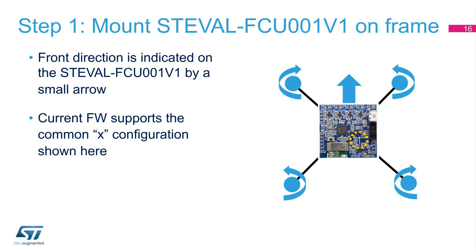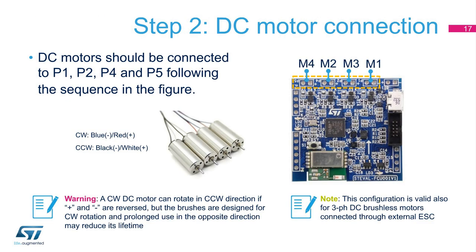Please note that to use a plus configuration, some modifications to the firmware are needed. To respect the directions and motor placement indicated on previous pages, DC motors should be connected to P1, P2, P4, and P5, following the sequence motor 1, motor 3, motor 2, and motor 4. Warning: a clockwise DC motor can rotate in a counter-clockwise direction if plus and minus are reversed, but the brushes are designed for clockwise rotation and prolonged use in the opposite direction may reduce its lifetime. Please check the documentation of the motor manufacturer for wire color assignment.